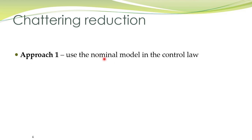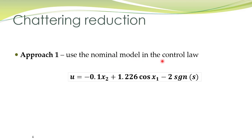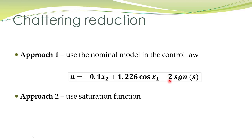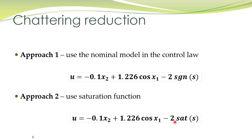In the lectures we learned two approaches to reduce the effect of chattering. The first approach is to use the nominal model of the system in the controller. In that case, the sliding mode control will be given by this expression as described in the lectures — here the magnitude of the discontinuous part of the controller has been reduced. The second approach is to use a saturation function instead of the signum function. In that case, the only thing we do is replace the signum function with the saturation function. We have already talked about the pros and cons of using this second approach.